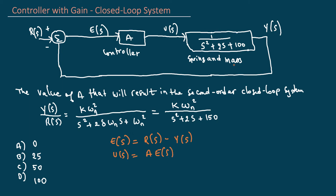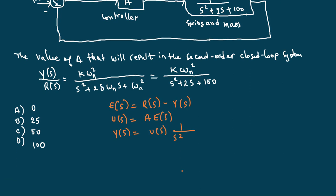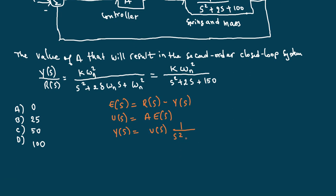What's Y(S)? Y(S) is your multiplier, this transfer function here, multiplied by U(S). So you have U(S) multiplied by 1 over S² + 2S + 100. Now let's try to get from these equations here, let's try to get Y(S) over R(S).